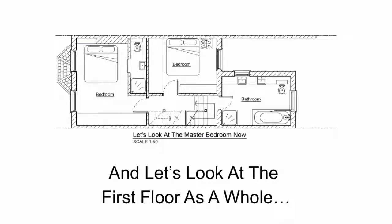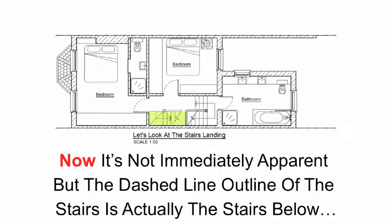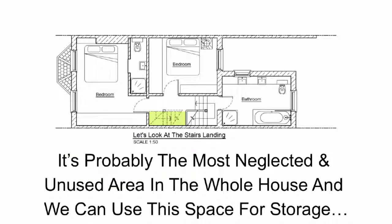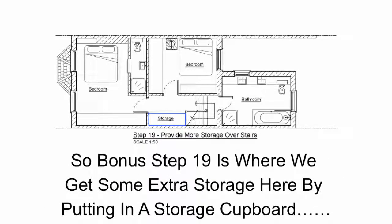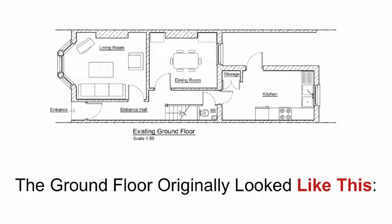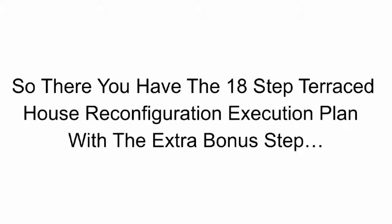Let's look at the first floor as a whole. The dashed line outline of the stairs is actually the stairs below on the ground floor — at first floor level this is floor space. It's probably the most neglected and unused area in the whole house, and we can use this space for storage. So bonus step 19 is where we get some extra storage here by putting in a storage cupboard. Now let's look at the first floor as it was and here it is now. And the ground floor originally looked like this and now it looks like this.